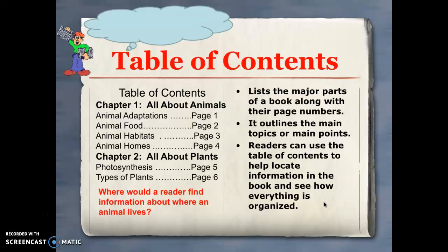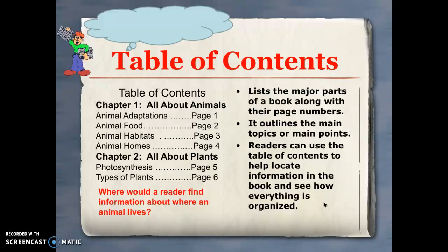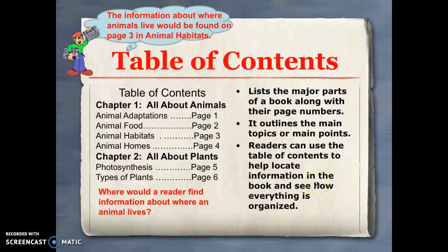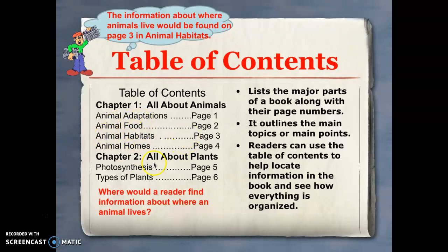Let's take a look at one type of text feature known as a table of contents. A table of contents lists the major parts of a book along with their page numbers. It can help you find all of the information in a story that you need to learn about and how everything is organized. For example, information about where animals live can be found on page 3 in Animal Habitats, so I would look at pages 3 and 4 of this chapter in All About Animals.